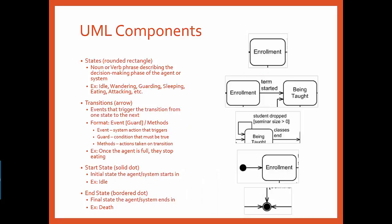States are visualized using rounded rectangles. States are named using either verb or noun phrases that describe the state of mind of the agent or system. Good examples would be idle, wandering, guarding, or eating.